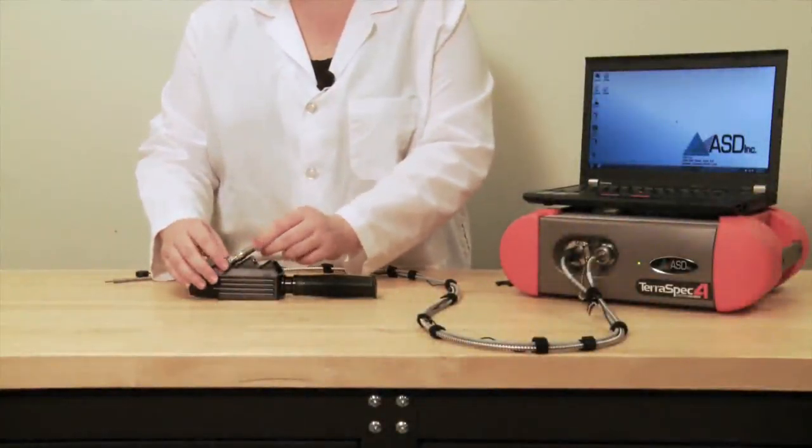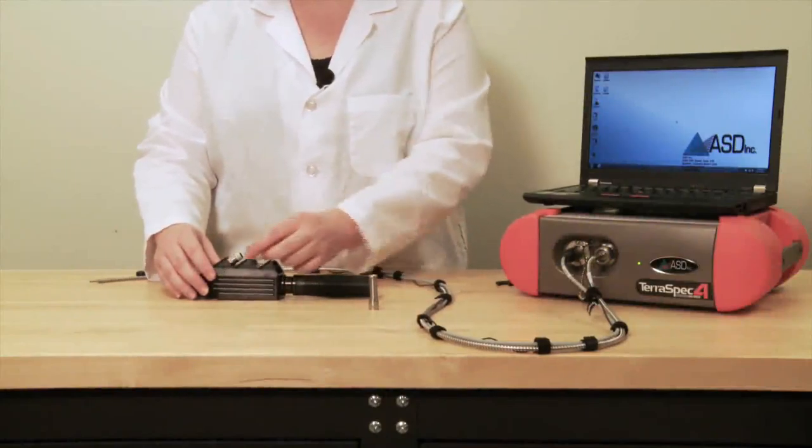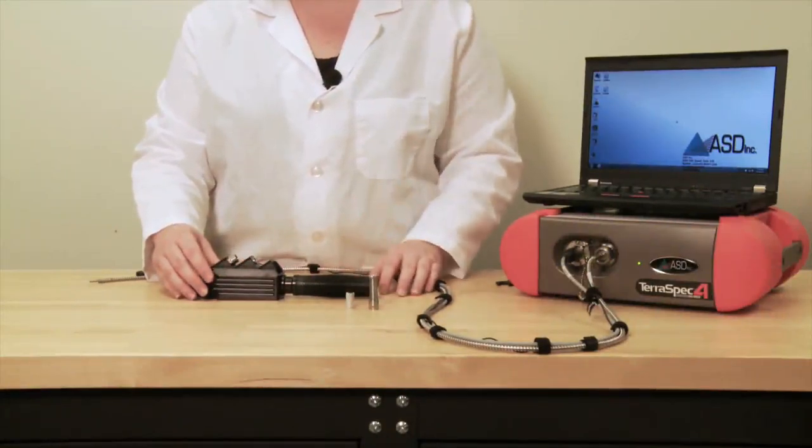Unscrew the metal strain relief sleeve on the contact probe. Remove the plastic sleeve underneath the metal strain relief sleeve.